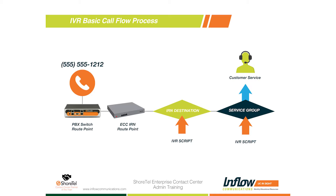Once the call gets to ECC, the IRN will have a destination. Typically, when you're thinking of a call going into a contact center queue, the destination is a group. In ShorTel's vernacular, in order to get to a group, you actually hit a service. The service knows about the group, but here's the distinction: the service is actually where the call gets queued. The service knows you want to go to customer service, but it won't release that call to customer service until it sees that an agent is available. Because we don't want to release that call to a group waiting for an agent when, after 30 seconds, if there's nobody available in the primary group, we can actually look at a secondary group simultaneously.